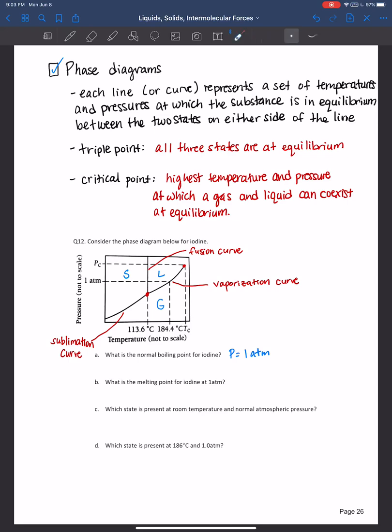Excellent. You want to intersect the vaporization curve. So you're going to go at one atmosphere and say, oh, here we go. And then the temperature is 184.4 degrees Celsius. Fantastic.